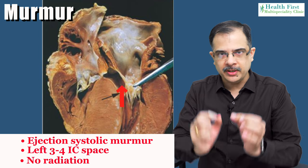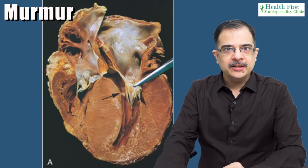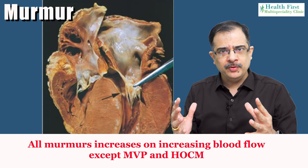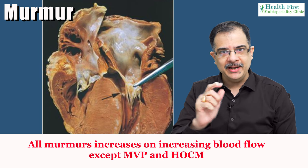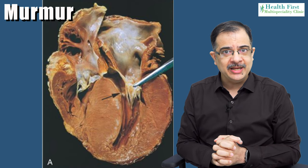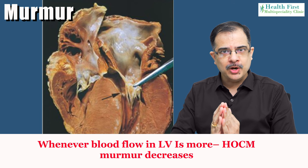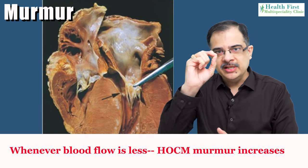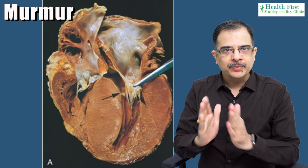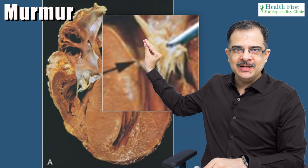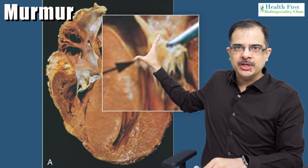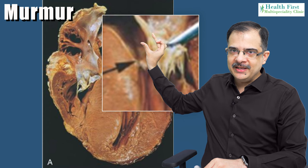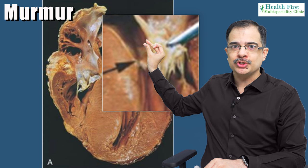To differentiate from aortic valvular stenosis: the murmur of HOCM does not radiate, while valvular aortic stenosis murmur radiates to the carotids. Regarding maneuvers, whenever blood flow increases all murmurs increase except the murmur of HOCM and MVP. When left ventricular blood volume is more, the HOCM murmur reduces; when blood volume in the ventricle is less, the murmur increases. This is because more blood keeps the septum and leaflet apart reducing obstruction, while less blood brings them into closer contact increasing obstruction.